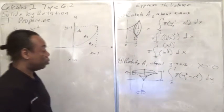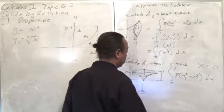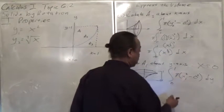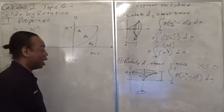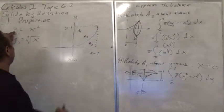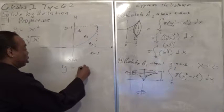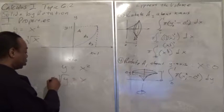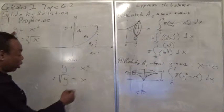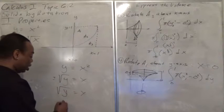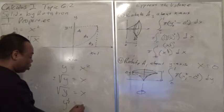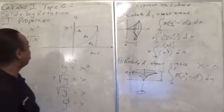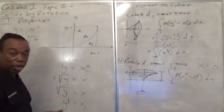Let's put in y1. Actually, this should be x1 — my fault. I have to solve for x. So y equals x squared, and this solves to the square root of y equals x. There is a plus and minus, but we'll only take the positive part. So we'll make this square root of y equals x, and one step further: y to the one-half power. So that's our x1 — x1 is y to the one-half power.